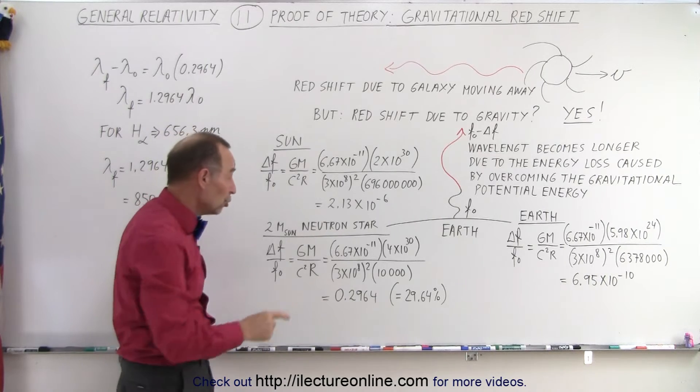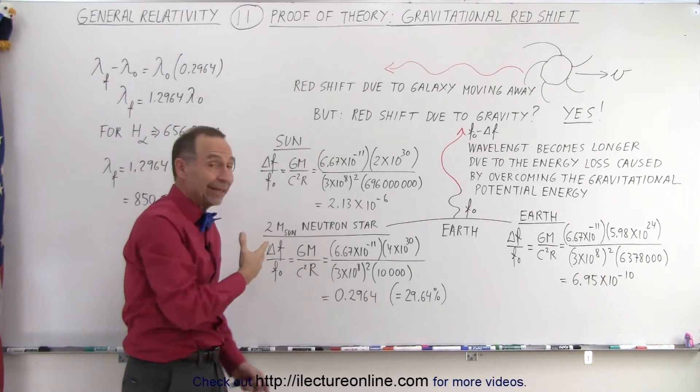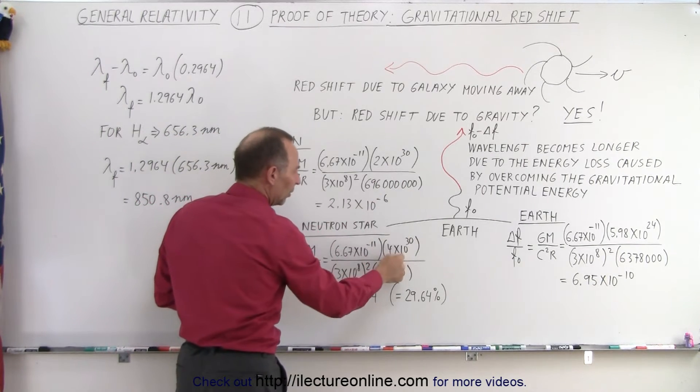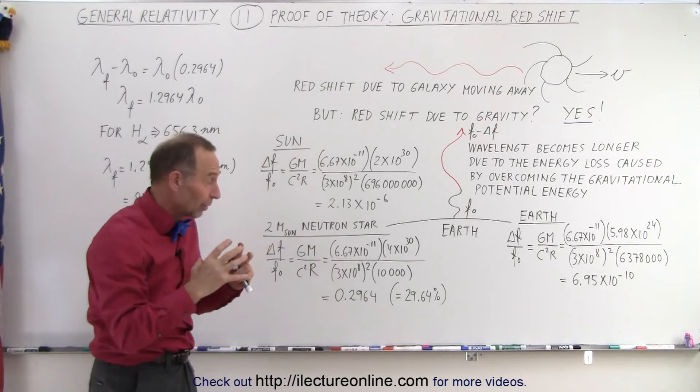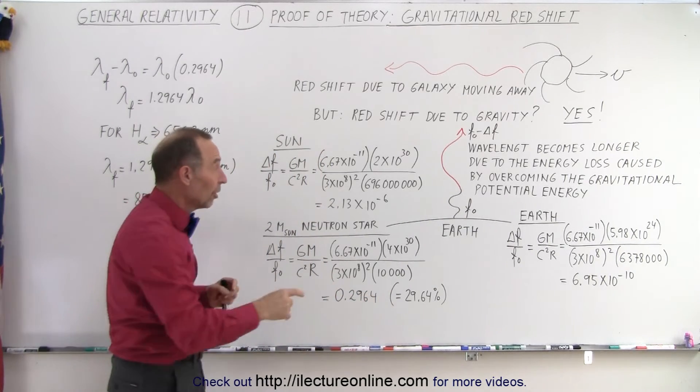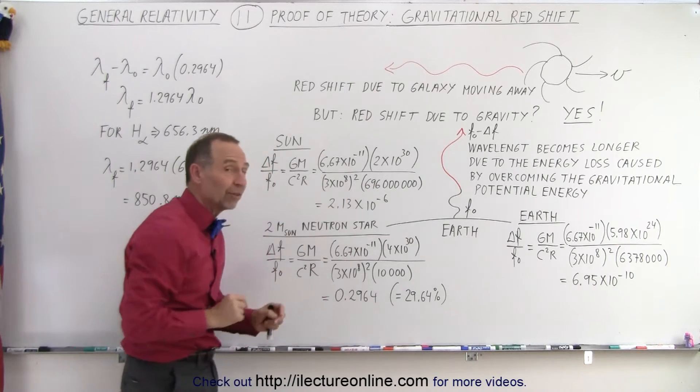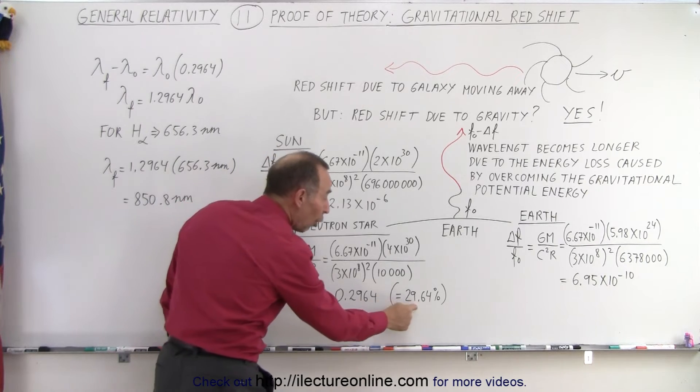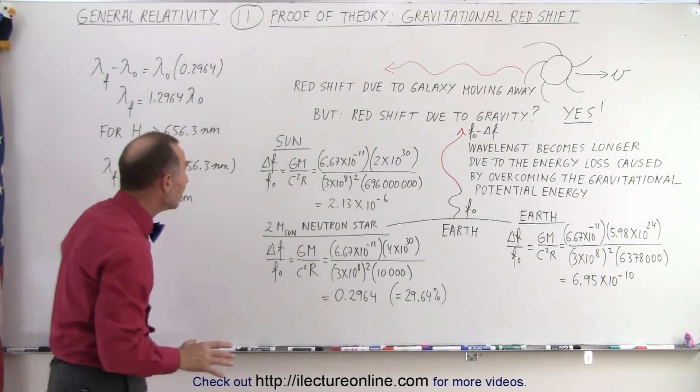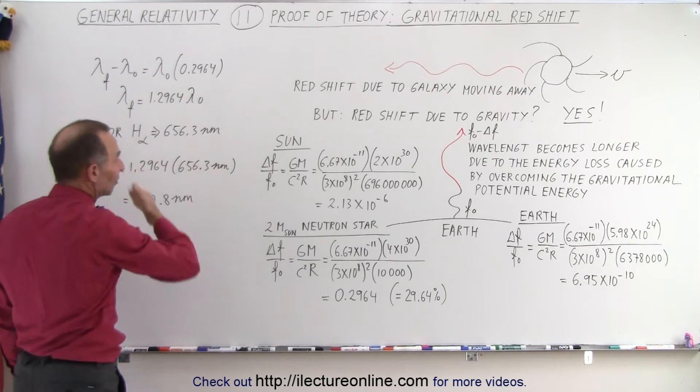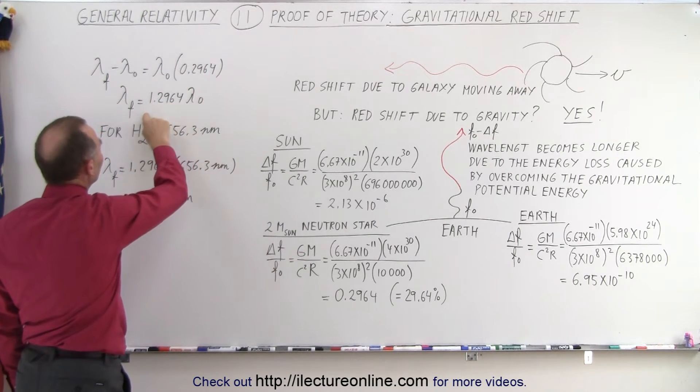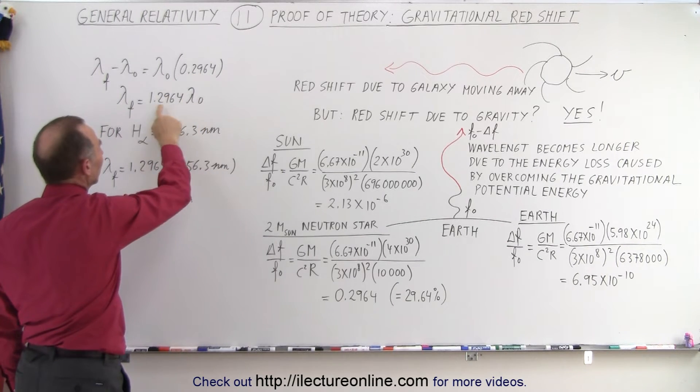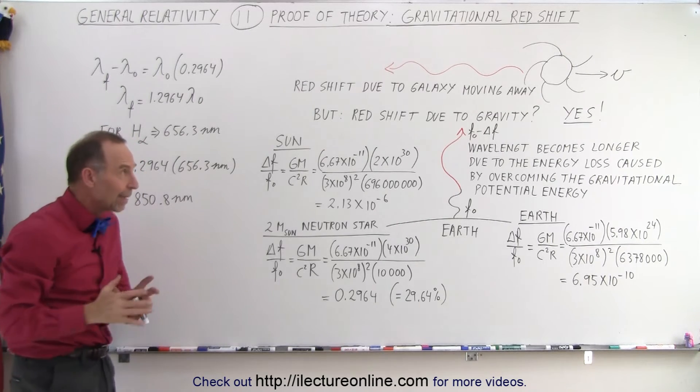But what about a neutron star that contains, let's say, twice the mass of the Sun? Well, twice the mass of the Sun would double this number, but now the radius of a neutron star is much smaller. It's only about 10,000 meters, rather than 696 million meters of the radius of the Sun. When you plug that in, notice we have a tremendous shift of almost 30%. What that means is, if we add this shift to the original wavelength, which is 1 times the original wavelength, we get 1.29. So almost 1.3 times the wavelength.